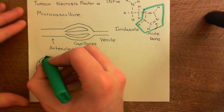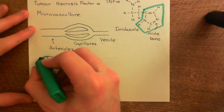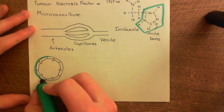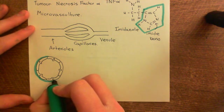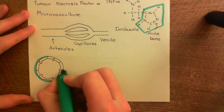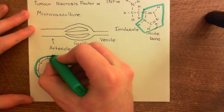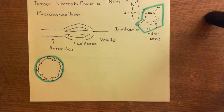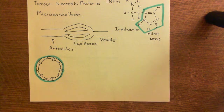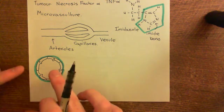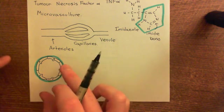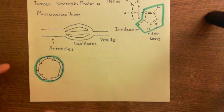Surrounding the endothelial cells, you'll have a basement membrane. This basement membrane is mainly made up of collagen — many different types of collagen, such as collagen 3, collagen 7, and collagen 4. It also contains other proteins such as fibrillin and laminins. The endothelial cells are attached specifically to the laminins within the basement membrane, which is what holds them in their positions.